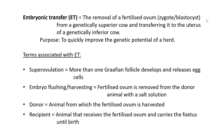The second term is embryo flushing, also called embryo harvesting. Basically, the fertilized ovum — the fertilized egg cell — is removed from the donor animal using a salt solution. It is washed out of the fallopian tubes and uterus of the cow that released the fertilized egg cell. The vet or whoever performs the procedure takes the embryo out of the female cow, and this is referred to as embryo flushing.